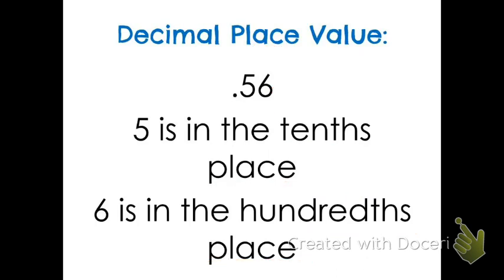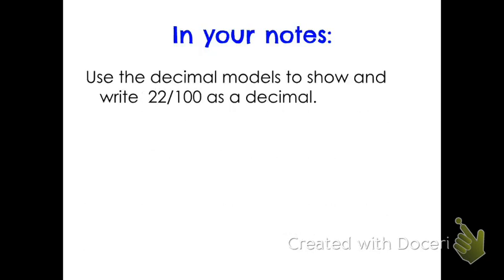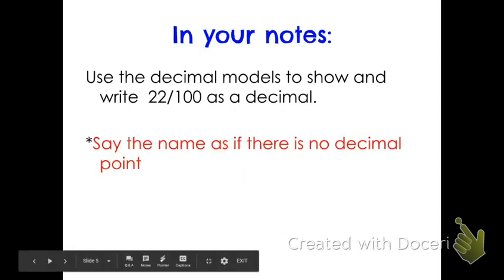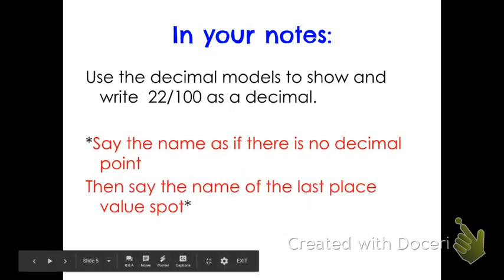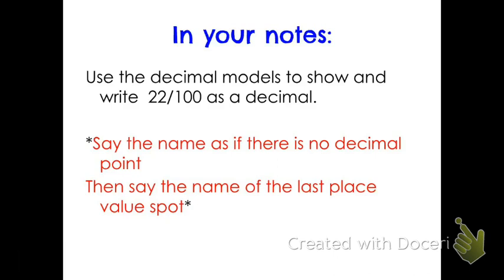The next important thing to talk about is how we actually read our numbers. So when we use the decimal models, we're going to show how to write 22 hundredths as a decimal. We say the name as if there's no decimal point, and you say the name of the last place value spot.